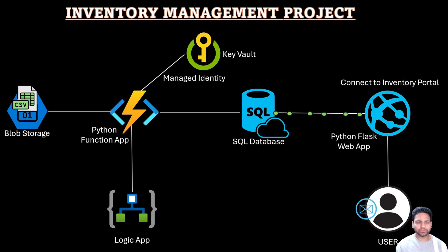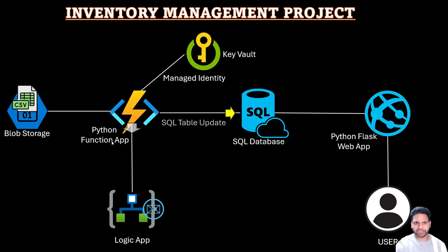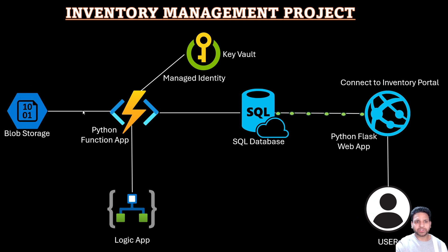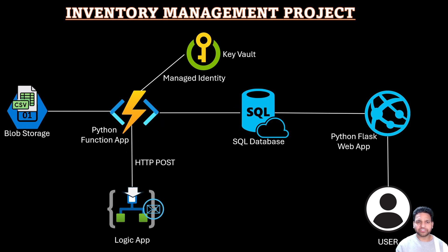Once a new CSV file is created, the next service to create will be a Function App. We will use Python as the runtime environment for the Function App. For the integration, we will be using a blob trigger, which means once the CSV file or blob is uploaded in the blob storage account, it will automatically trigger the Azure Python function.